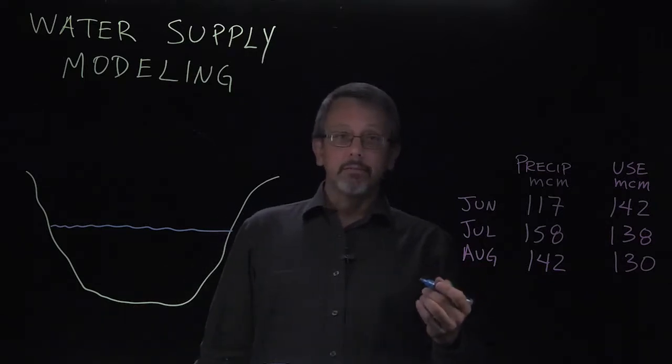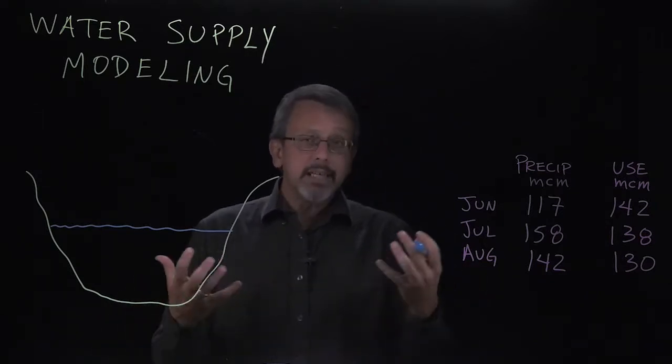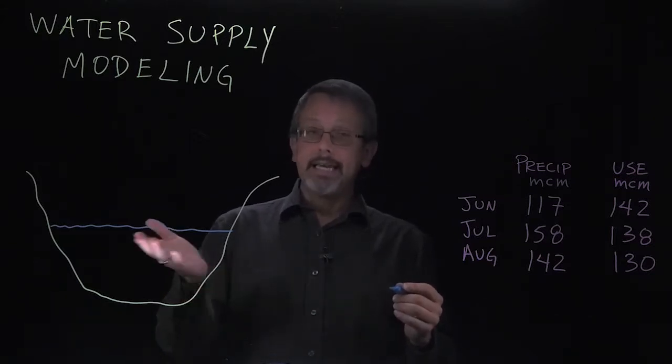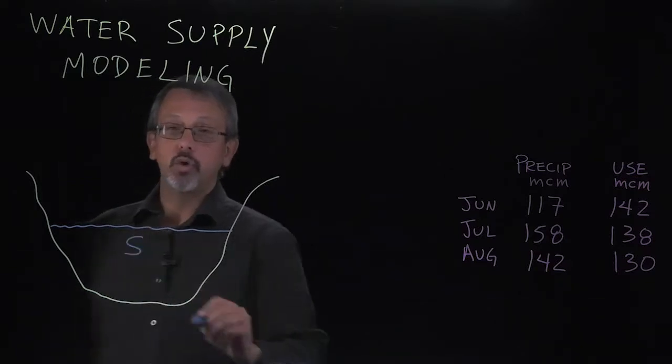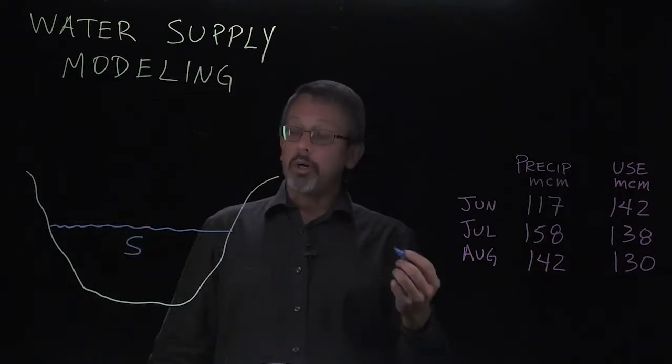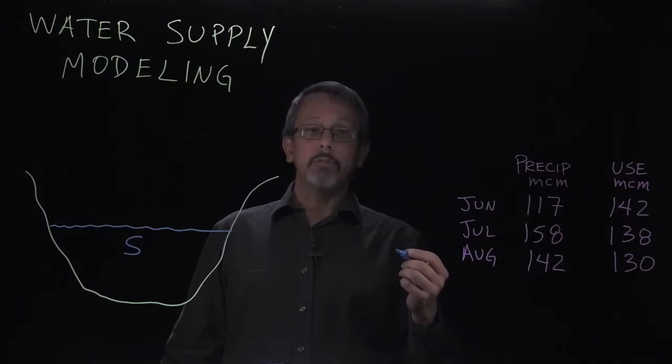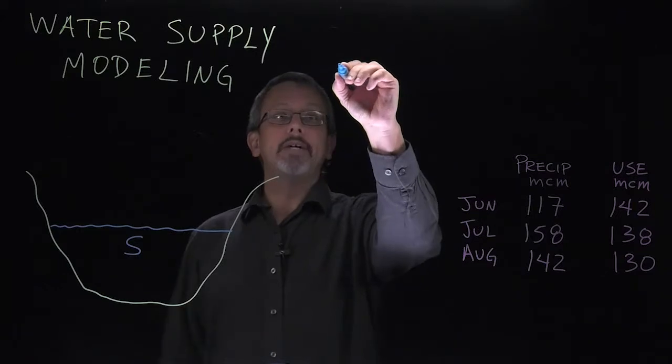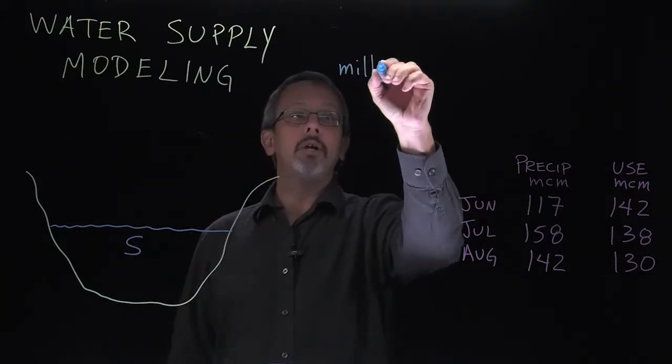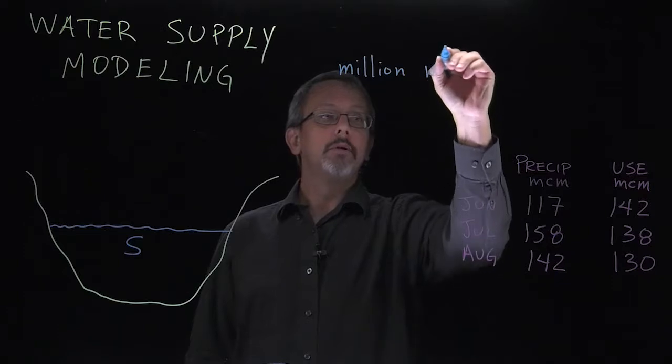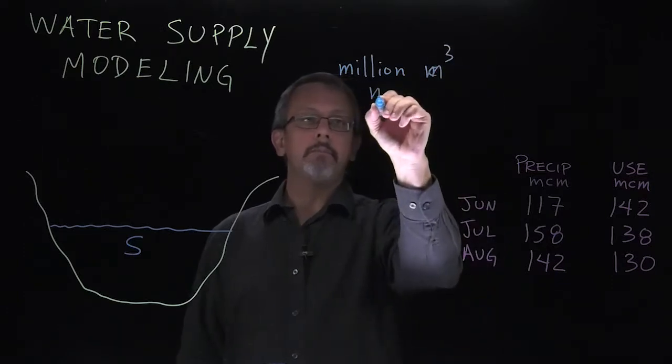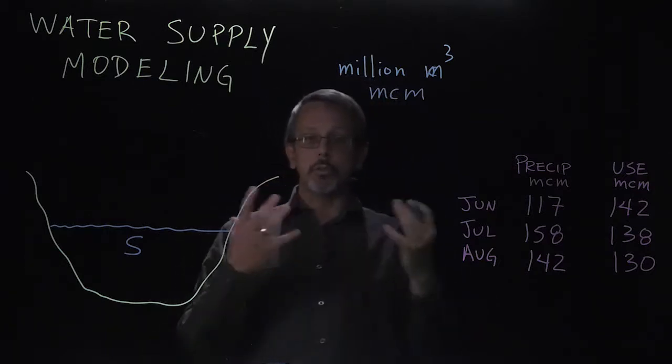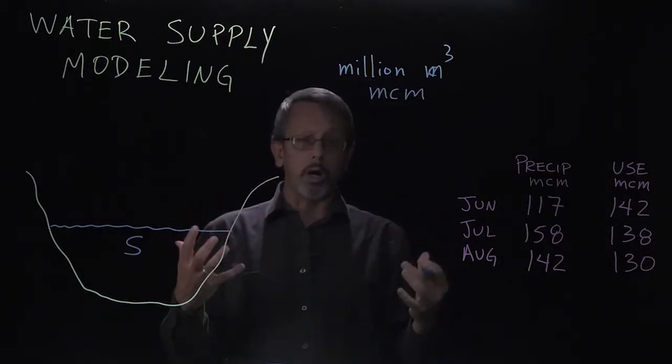In a case like this we have a very simple budget that we're going to work on. We're going to consider how much water is in the reservoir, which is something we call storage. That storage is going to be a volume, usually measured in cubic meters. In this case we're going to talk about a million cubic meters, million meters cubed or MCM. That's a large amount of water that we're dealing with.